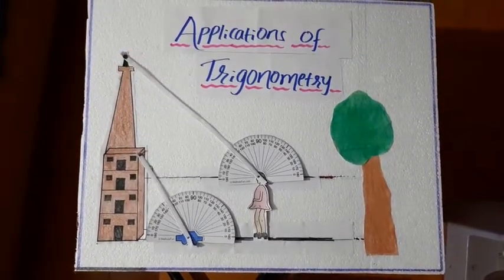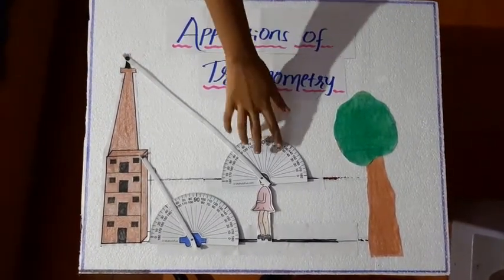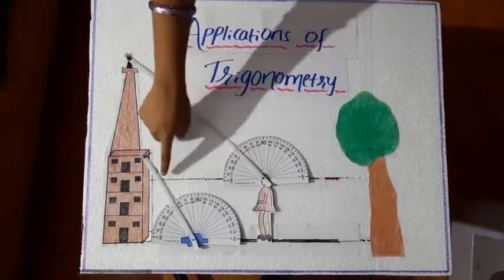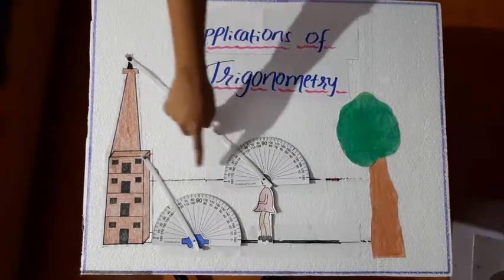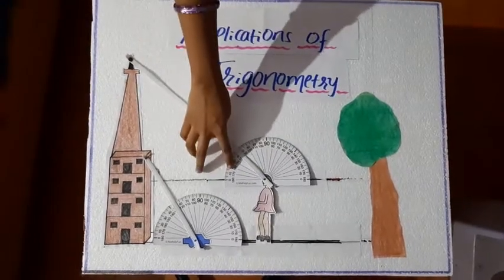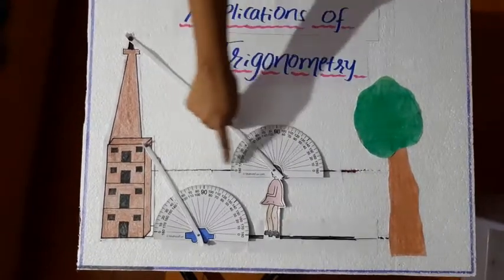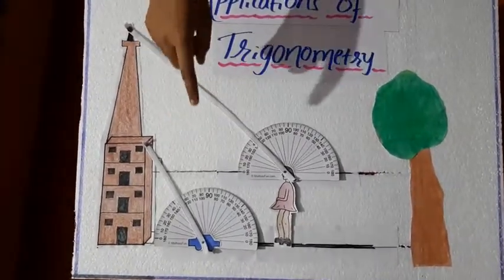And next comes horizontal line. Here, this girl is looking at the top, but we have to take a line that is straight to her eyes. In other words, we can say that to zero degree. See, this zero degree line, this is known as horizontal line.